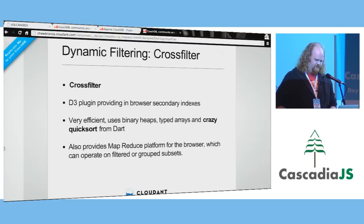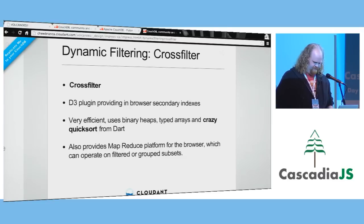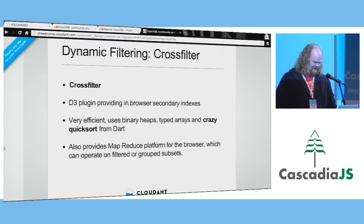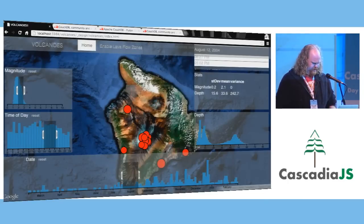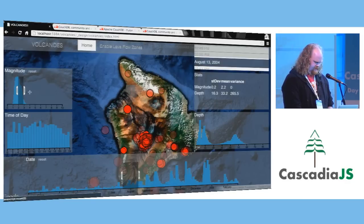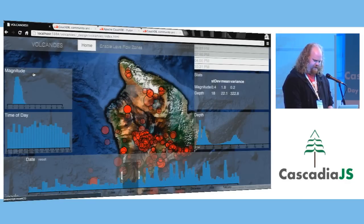Crossfilter also uses the craziest quicksort I've ever seen — it uses a sorting network. It's worth looking at if you're interested in algorithms. I have no idea what it does besides quicksorting. One of the interesting things about Crossfilter and secondary indexes is that it really helps you discover data and discover interesting things about the data.